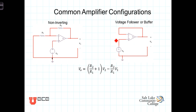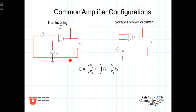We can analyze each of these different circuits by summing the currents at the inverting terminal. In the previous video we derived an expression giving us the output voltage in terms of V2, the voltage at the non-inverting terminal, V1, the voltage at the inverting terminal, and the resistors in the circuit. Rather than re-deriving each relationship, let's show how this equation leads to the output-input relationships for each of these four configurations, starting with the non-inverting amplifier.